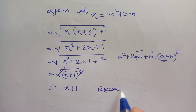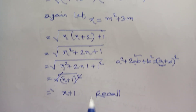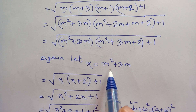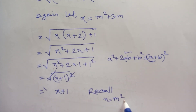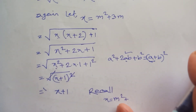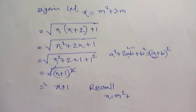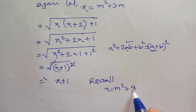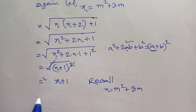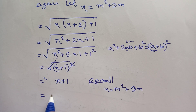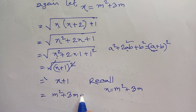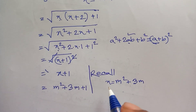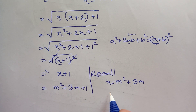Recall x equals m²+3m. So the answer is m²+3m+1.